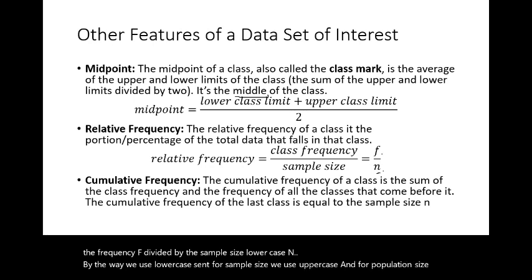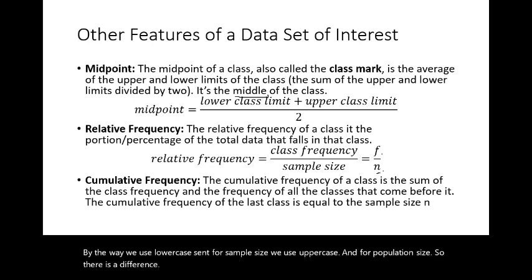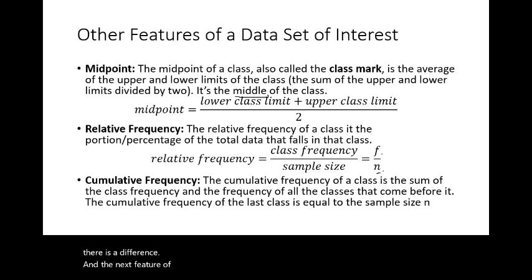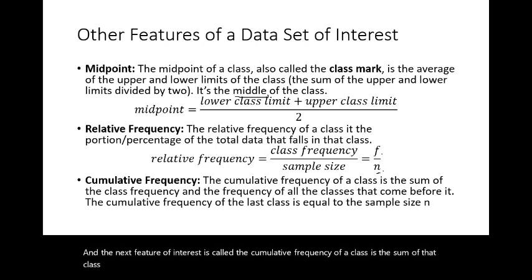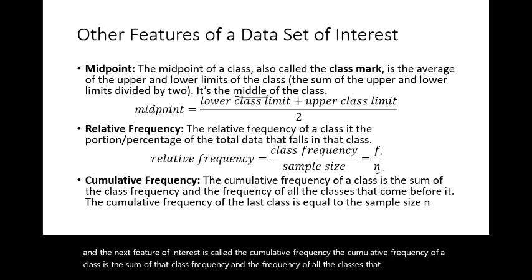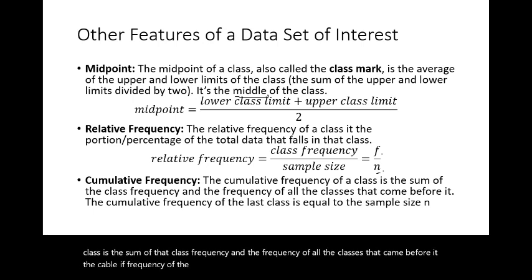The cumulative frequency of a class is the sum of that class's frequency and the frequencies of all classes that came before it. The cumulative frequency of the last class should equal the sample size n.